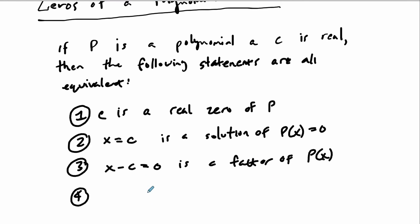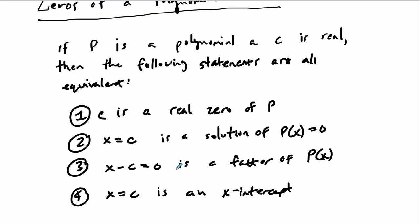And another way to look at this is that X equals C is an X-intercept. If one of these statements is true, they're all equivalent to each other — so they're all true.